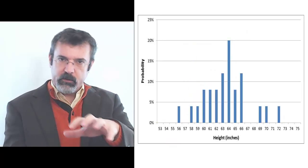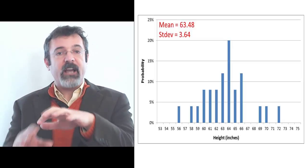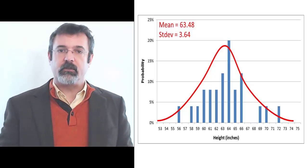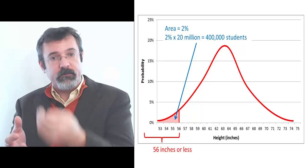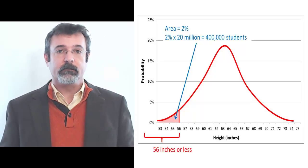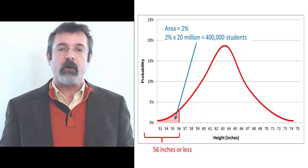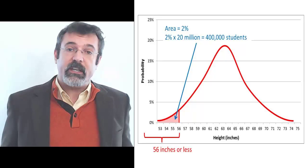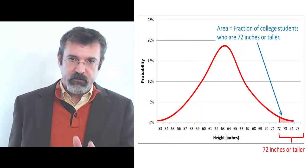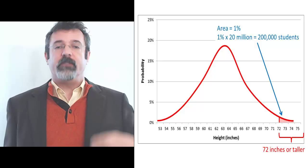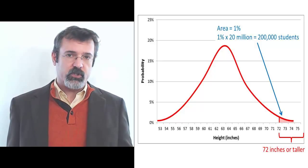Notice that we've gone through a two-step process. The first step was to take our sample of students and calculate the average and the standard deviation. The second step is to find the normal distribution that has that same average and standard deviation. The area from 56 inches and below under this normal distribution is 2%. So if there are 20 million students in the United States, 2% — or 400,000 students — would be 56 inches tall or shorter. Similarly, the area under the normal distribution from 72 inches and above is 1%, giving us an estimate of 200,000 students who are 72 inches tall or taller.